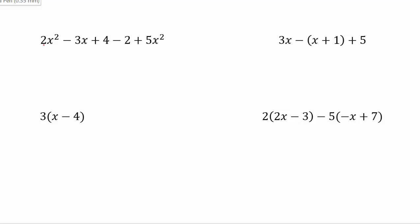Starting off with this first example here, if I have my 2x², I can only combine x squareds with other x squareds. So this 2x² cannot combine with the 3x, cannot combine with the 4, cannot combine with the negative 2. However, we have a plus 5x² here. So I can combine if I have 2 x squareds and I add 5 more x squareds, that should give me 7x².